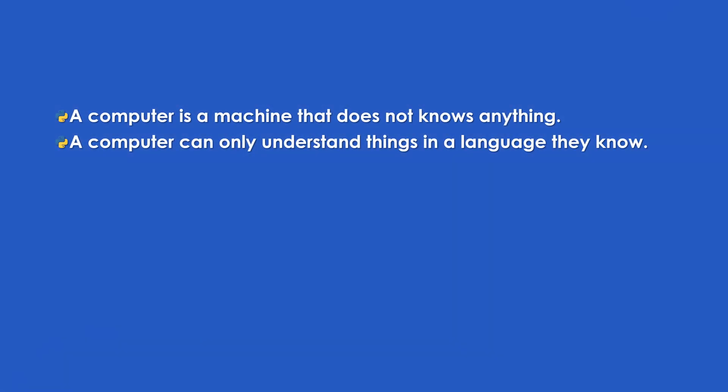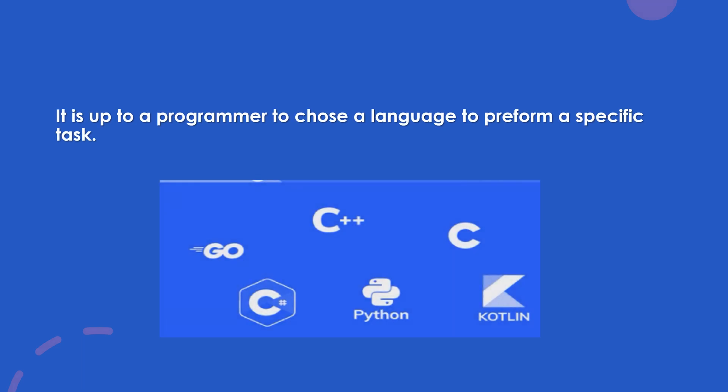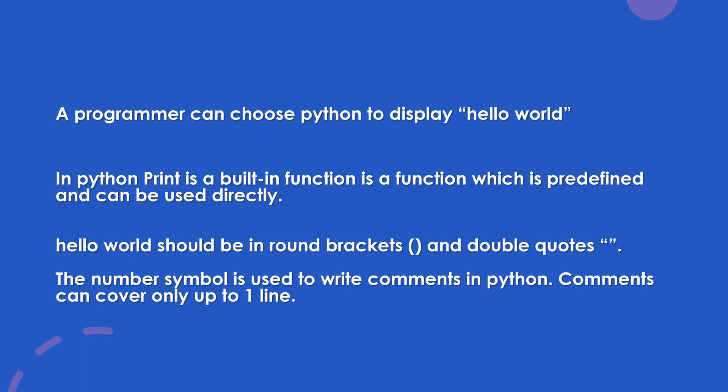A computer is a machine that does not know anything. A computer can only understand things in a language it knows. It's up to a programmer to choose a language to perform a specific task. A programmer can choose Python to display Hello World. In Python, print is a built-in function — a function which is predefined and can be used directly. Hello World should be in round brackets and double quotes. The number symbol is used to write comments in Python, and comments can cover only up to one line.